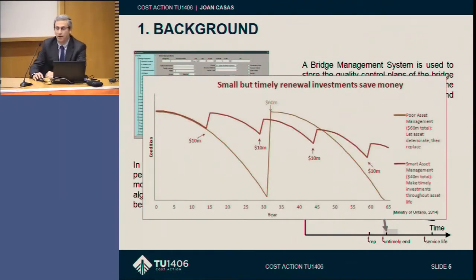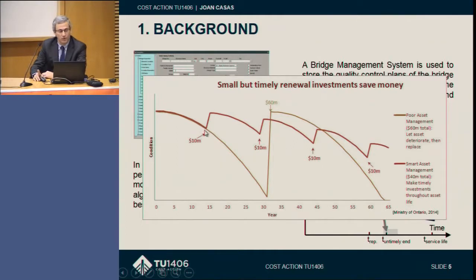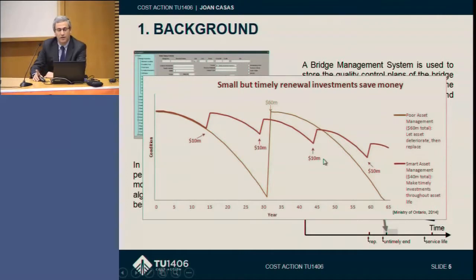This is very typical in network management. We have the performance indicator for a given condition over time. We can have different policies: one where we allow big deterioration and then perform a very large rehabilitation, or other policies with more preventive maintenance over time. What we are ultimately looking at is the maximum optimization of the limited resources that we have.